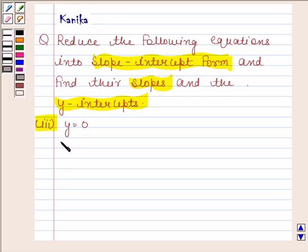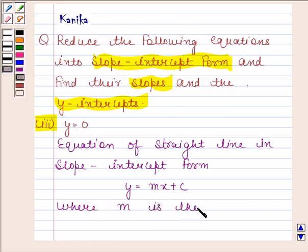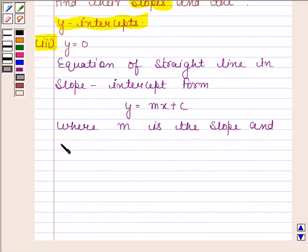Before solving this question, we should know that the equation of a straight line in slope-intercept form is given by y equals mx plus c, where m is the slope and c is the y-intercept.